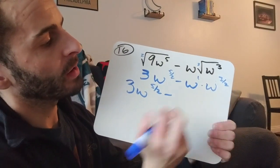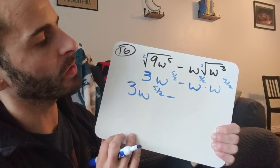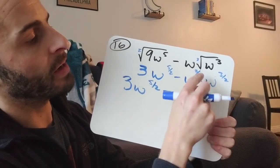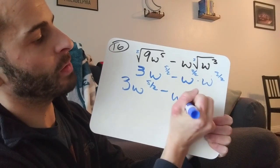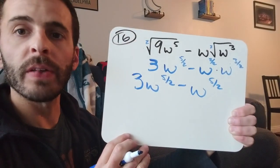So this is really a 1, but that 1 doesn't help because this is a fraction. I could say it's 2 over 2, and I can add 2 over 2 plus 3 over 2, so I have w to the 5 over 2. So now it looks like I have like terms.